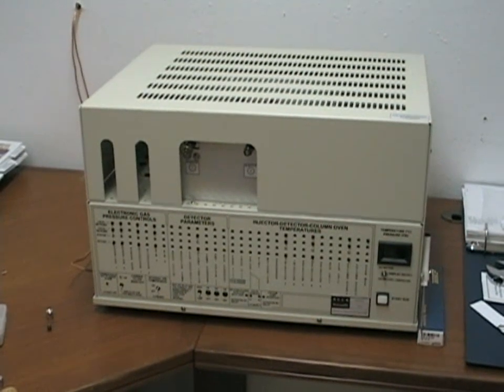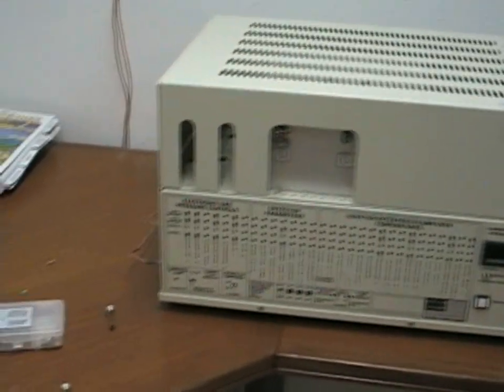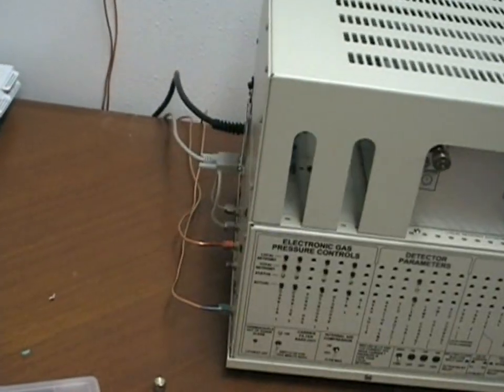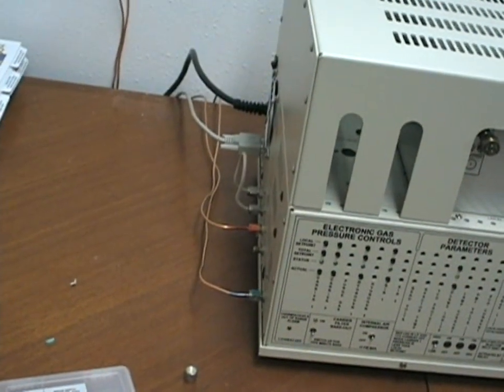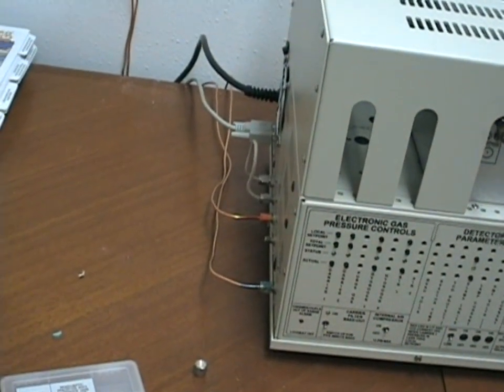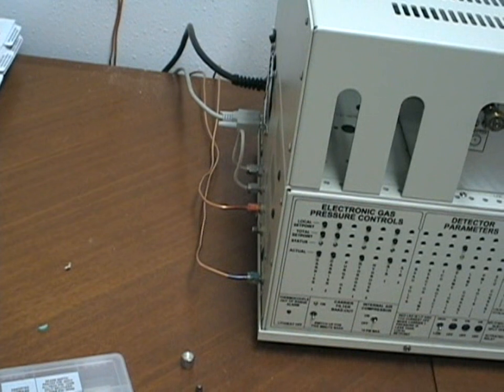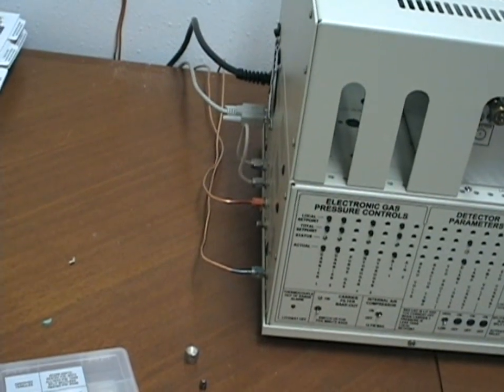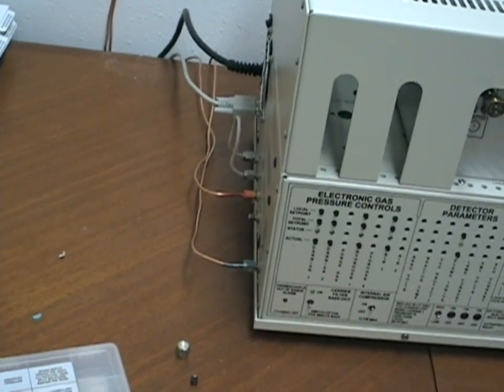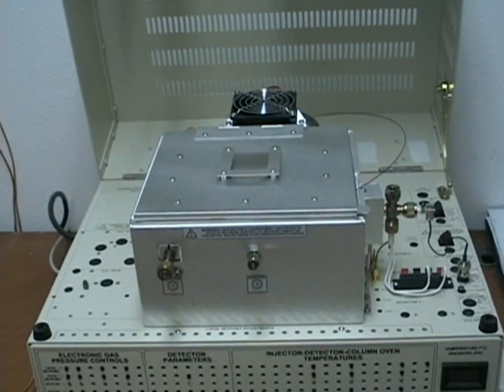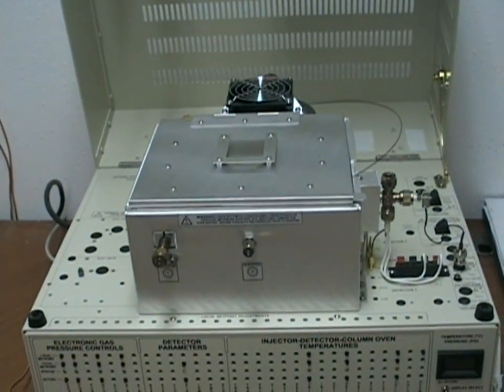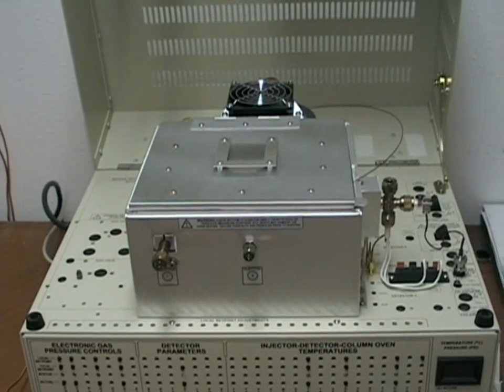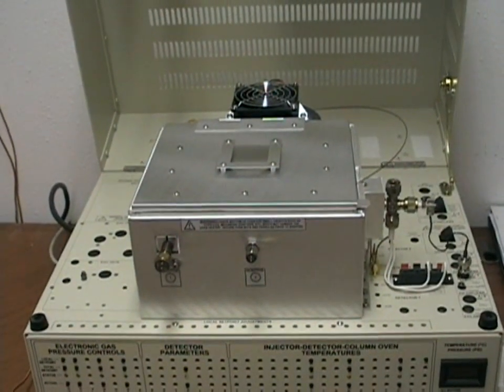The GC system requires hydrogen and helium gases connected to the left side of the GC to create the flame for the FID and provide the carrier gas for the system. Under the lid of the GC are your injection ports and the column oven.